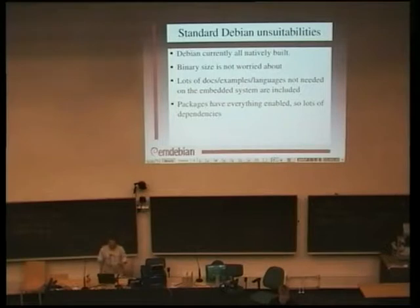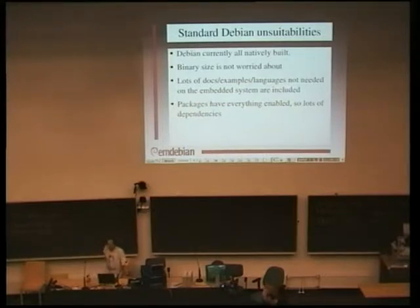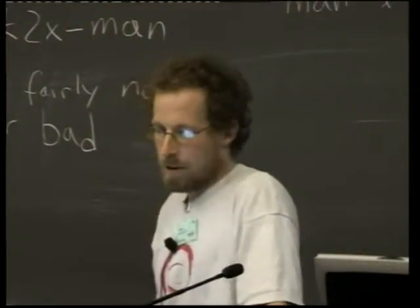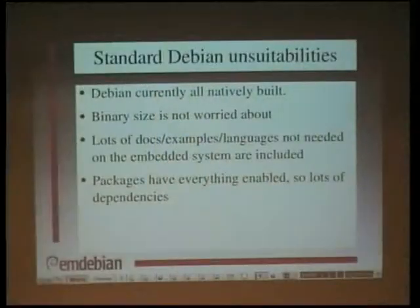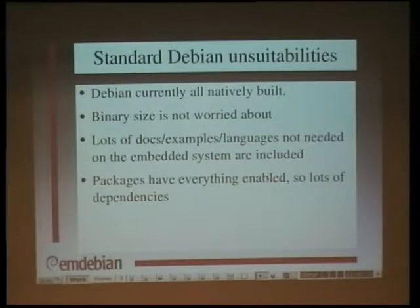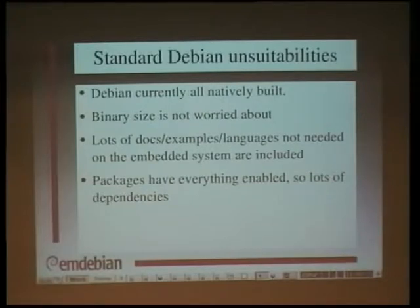Reasons why Debian isn't really where you want to start: it's all built natively. There are good reasons for that — it works, it's simple, that's the way everything was designed to be done. But embedded developers really don't like natively building. You can do it, and it can be quite practical if you have a fast enough target machine. So if you've got a fast ARM box, you can build your ARM binaries on that. You can buy a 600 MHz ARM desktop box which will compile everything pretty slowly by modern standards, but still fast enough. But in practice, most embedded developers need to be able to cross-build things.